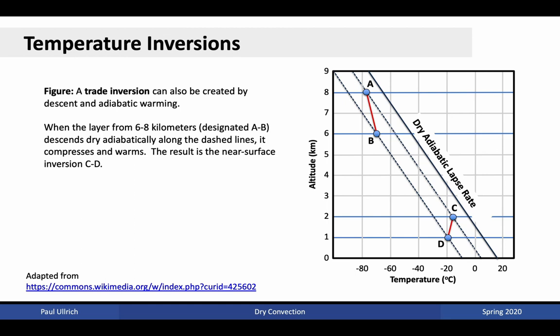Temperature inversions can also emerge via trade inversions, created by descent within the air. Under conditions experienced in the subtropics, air tends to subside and descend as it cools. Within a layer approximately six to eight kilometers thick, temperature decreases with altitude. But as those air parcels sink, they compress, taking up a thinner band of altitude. Following the dry adiabatic lapse rate as they sink, compressing the layer also produces an inversion in the temperature profile — changing it from cooling with altitude to warming with altitude. The result is a near-surface inversion between fluid parcels C and D in the end state.